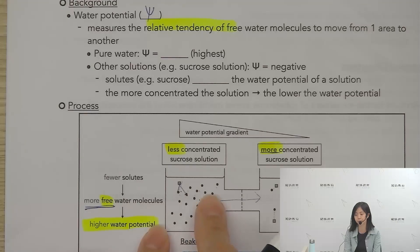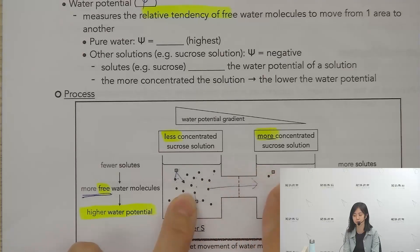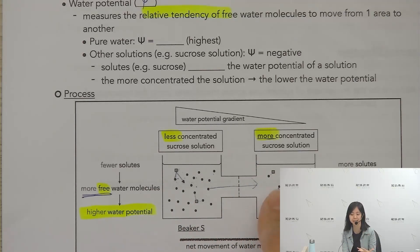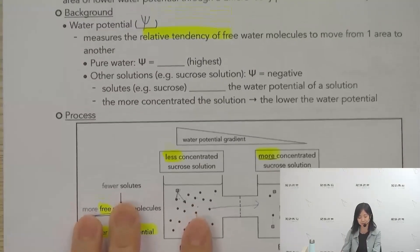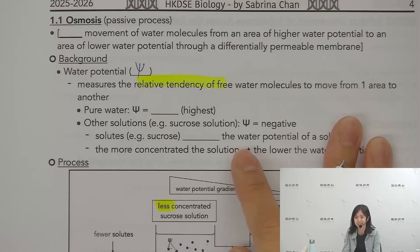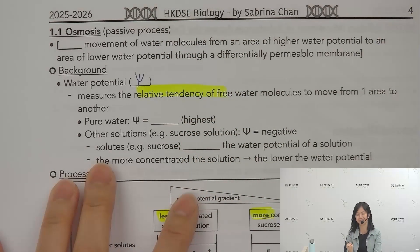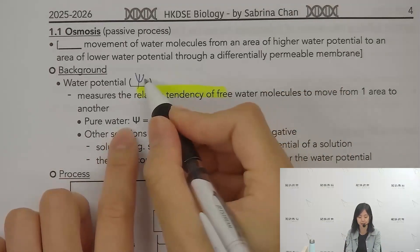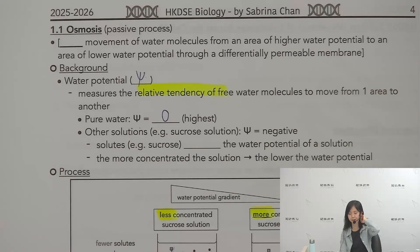Because here, free water molecules are plentiful and very numerous, if they want to go to another place where there are fewer free water molecules, the tendency will be higher. So we say it has a higher water potential.